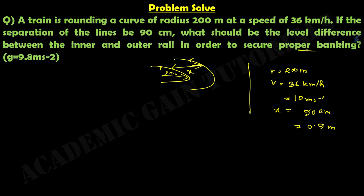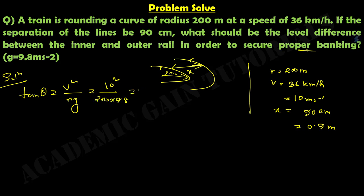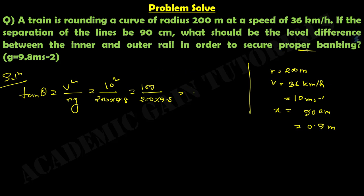First of all, we have to find out the banking angle. We know the formula: tan θ equals v² divided by rg, which equals 10 squared divided by 200 into 9.8, that is 100 divided by 200 into 9.8, which equals 1 divided by 2 into 9.8, so tan θ equals 1/(2×9.8).